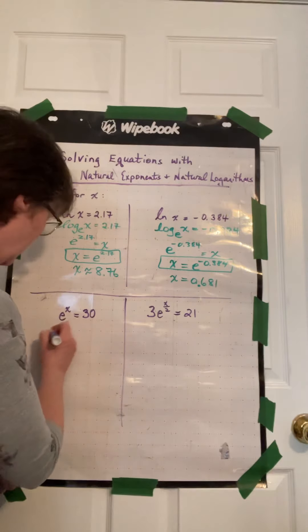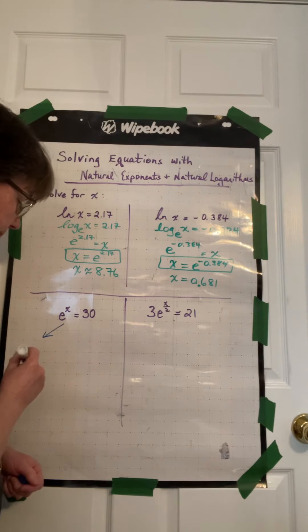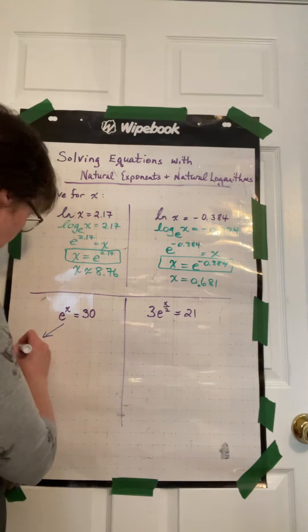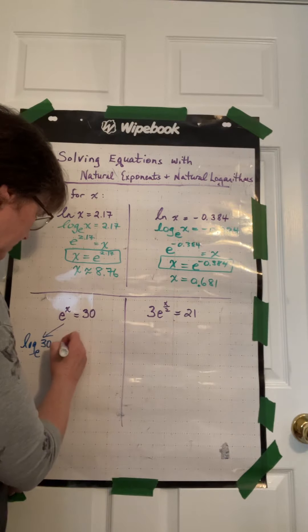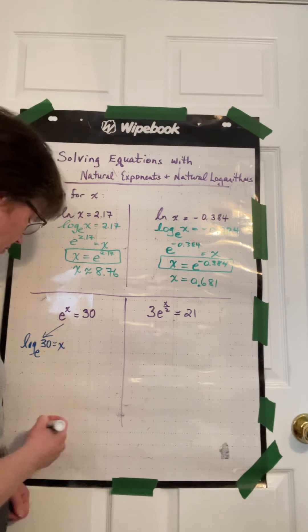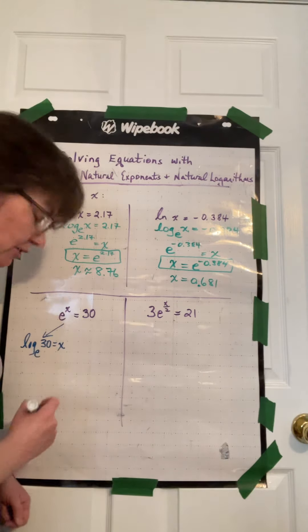We can rearrange into a log statement, or we can log both sides of the equation. So I'm going to show you both ways. So rearranging into a log statement, we would have log base e of 30 is equal to x. That works out quite nice, but I haven't used proper notation yet.